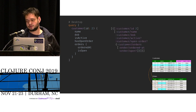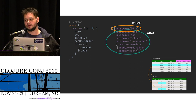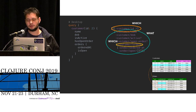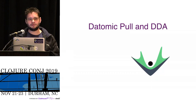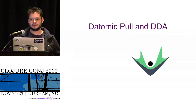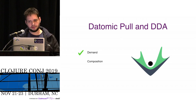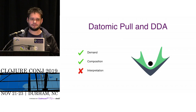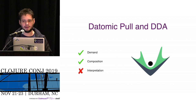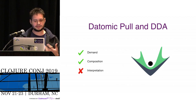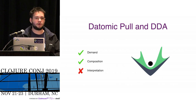We can write it like this. The same thing: we have the "which" pointing to the resource, we have the "what" pulling the items, we have a connection to another "which," and we have another "what" inside. So let's check pull syntax against the demand-driven architecture ideas: demand — check; composition — check; interpretation — not so much, because the pull syntax is tied to the Datomic implementation, it's not actually extensible. So although it seems like a good path, we still had more work to do on top of that.